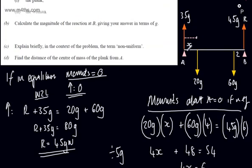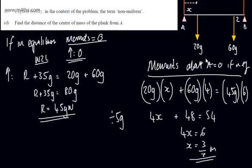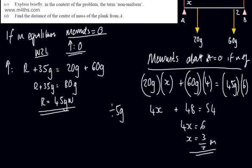So the distance of the centre of mass of the plank from A is 3/2 metres. If you take moments about a different point and end up with a negative number, that simply means the force you're looking for is on the other side of the point you're taking moments about. The magnitude will be the same — you've just picked the wrong side, so that's not an issue.